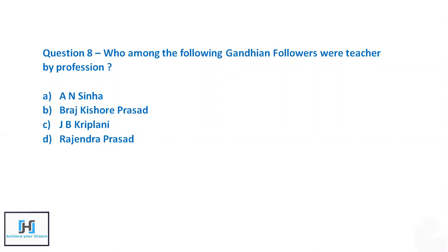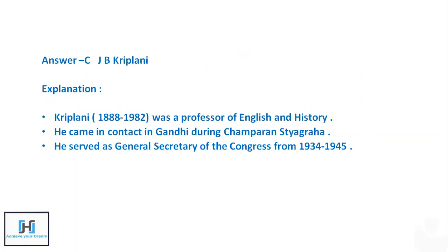Question 8: Who among the following Gandhian followers was a teacher by profession? Options are Anugrah Narayan Sinha, Braj Kishore Prasad, J.B. Kripalani, or Rajendra Prasad. All four were associated with Gandhi during the Champaran Satyagraha movement. Anugrah Narayan Sinha was a lawyer by profession. J.B. Kripalani was a Professor of English and History, making him the teacher by profession among the options.